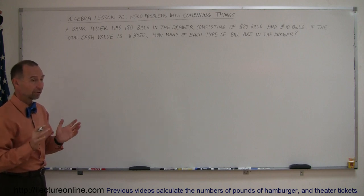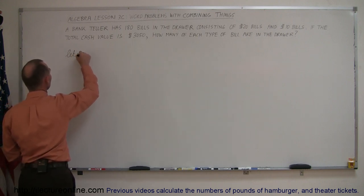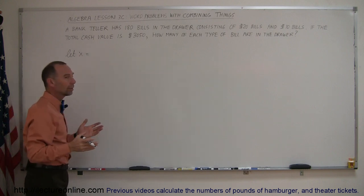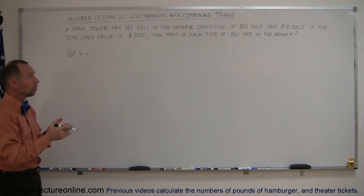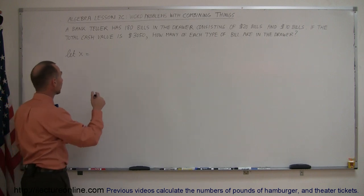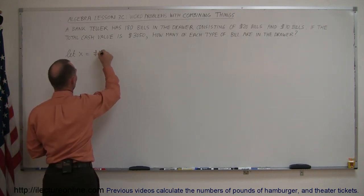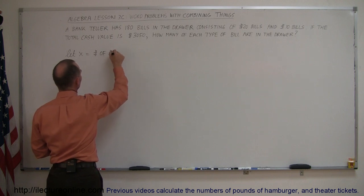All right, so let's start defining. Let's say let x equal, now what should we let it equal to? Well, we have two different kinds of bills, and so we can let x equal the number of, let's say, $20 bills. So let x equal the number of $20 bills.